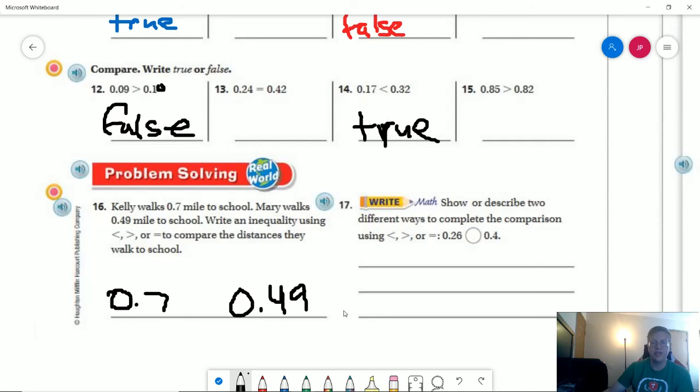If I put this part first, this is my smaller number, so I use less than. If I start with the larger number, I use greater than.